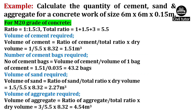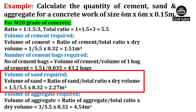The required quantity of sand will be equal to ratio of sand upon total ratio, multiplied by dry volume. Ratio of sand for M20 grade of concrete is taken as 1.5, total ratio is 5.5 and dry volume is 8.32. So on substituting these values, volume of sand will be equal to 2.27m³.